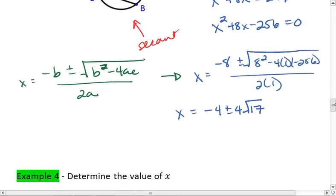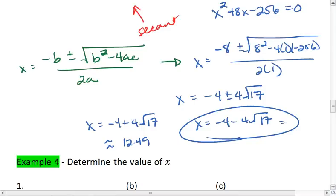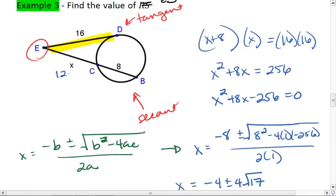Which means my two solutions are either x equals negative 4 plus 4 times the root of 17, which is approximately 12.49, or that x equals negative 4 minus 4 times the root of 17. The problem with this solution is it gives us a negative number, which we don't like. So we're actually going to discard it, and we're going to use the 12.49. Plugging 12.49 back in, we find that EB is approximately 20.49.